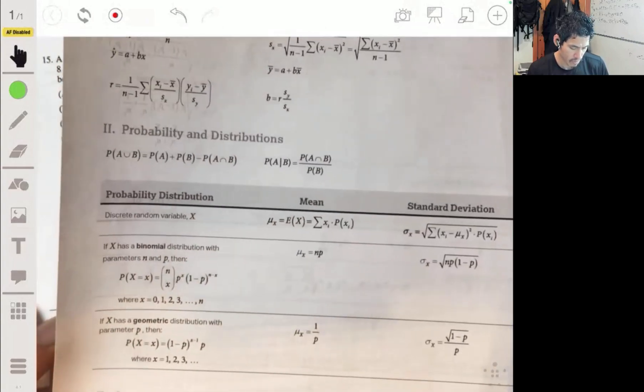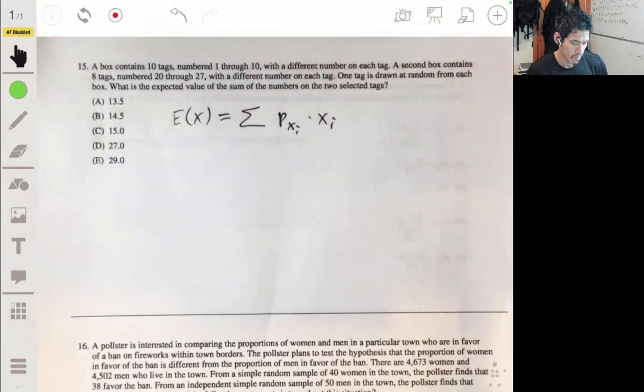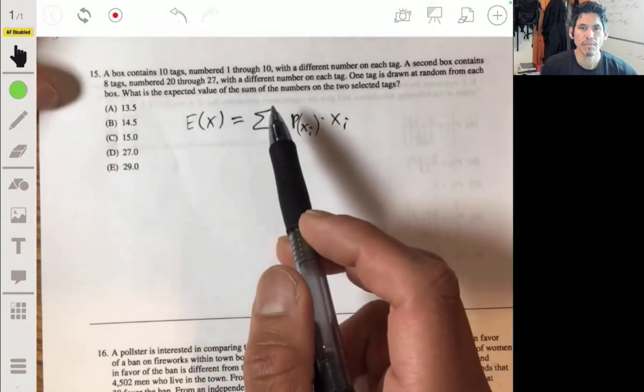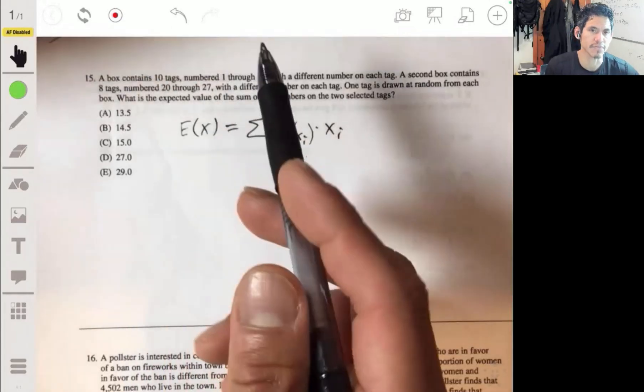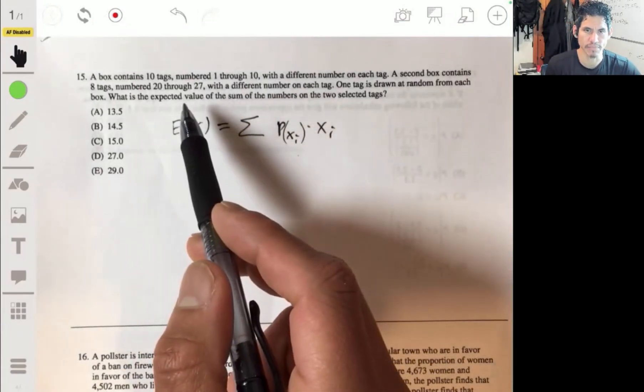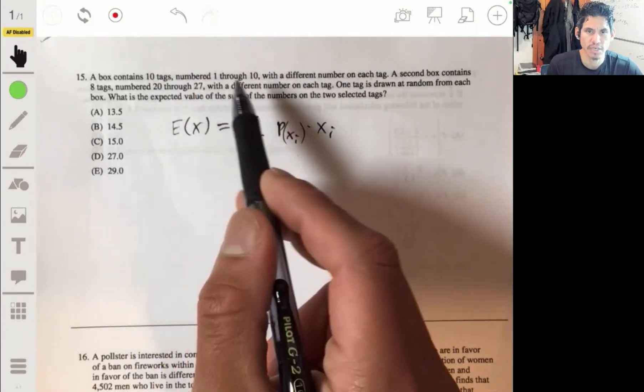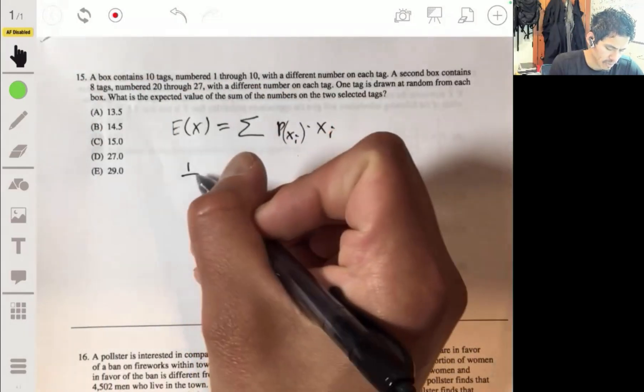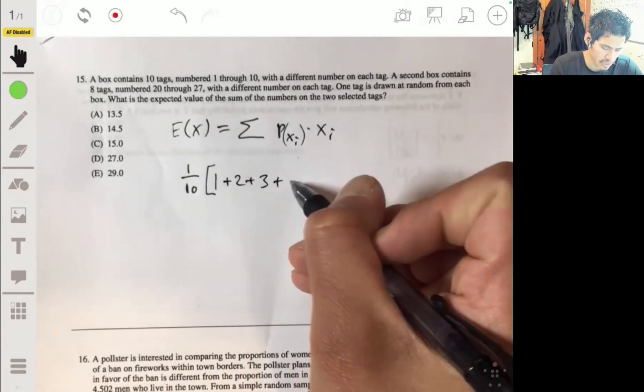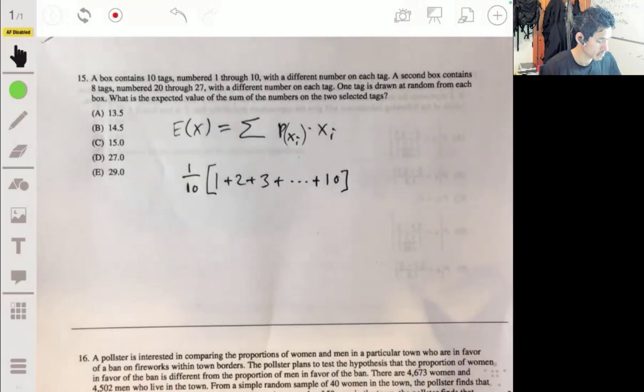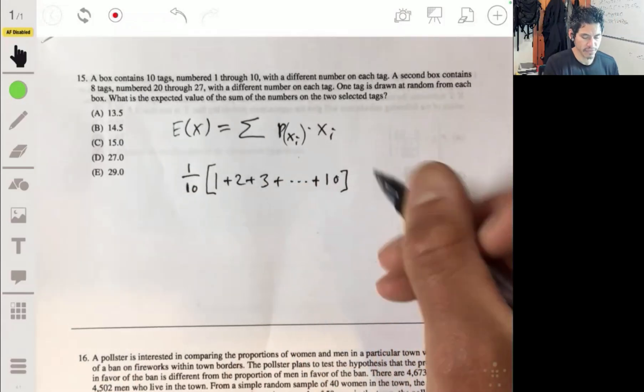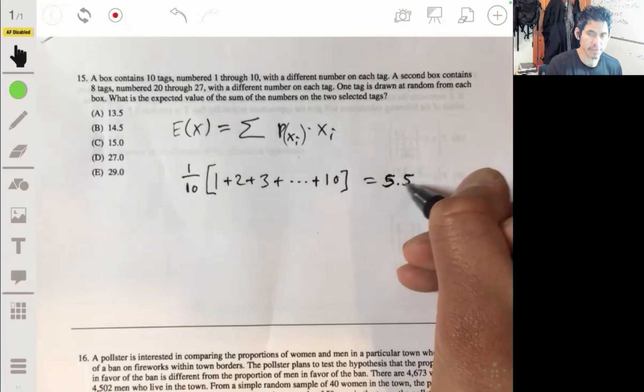In this case, we have these 10 tags. Let's find the average value or expected value for each box, then combine that. The first box has 10 tags, which means each tag has a probability of 1/10 being selected. And the value on each tag is 1, 2, 3, 4, 5, all through 10. You're going to add these numbers together and multiply by 1/10. These numbers add together to 55, times 1/10 is 5.5.